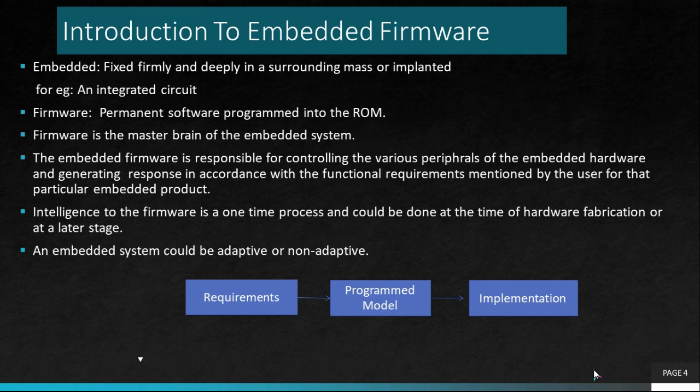In the case of firmware corruption or damage, the firmware has to be removed from the embedded product, reprogrammed, and reloaded — only then can the system resume normal functioning. This is considered the main disadvantage of embedded systems: once the firmware is programmed and embedded into the system, any kind of alterations will not be permitted. If any alteration has to be done, the firmware must be removed from the system and reprogrammed from the beginning.